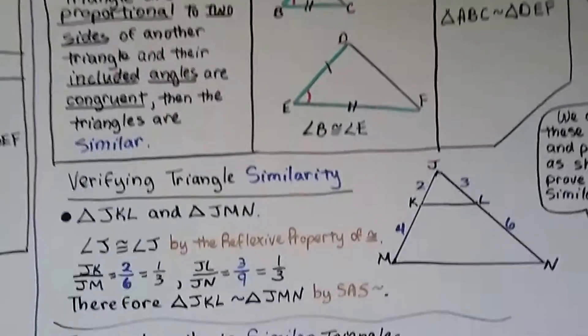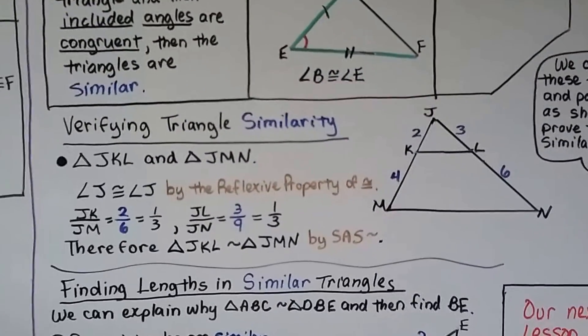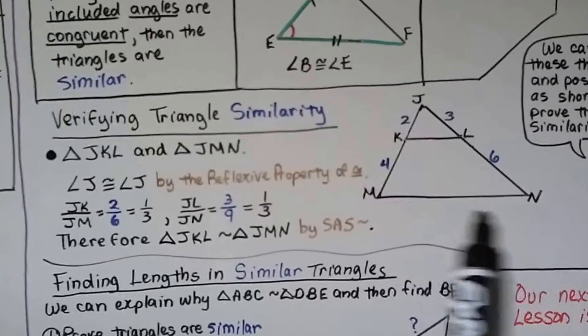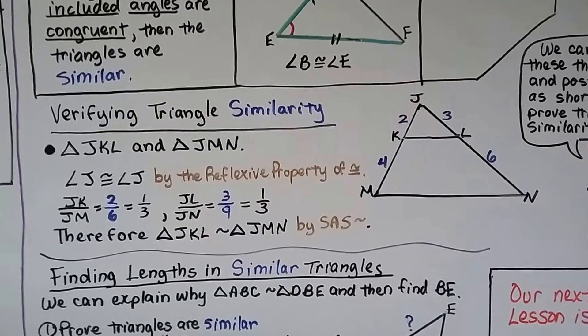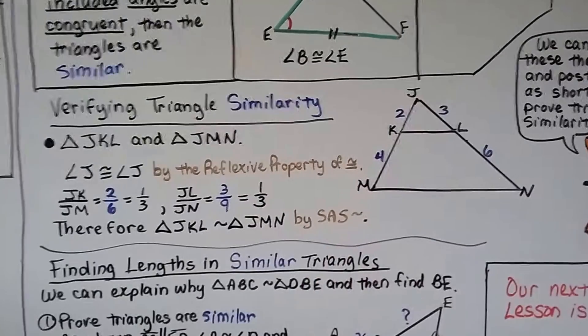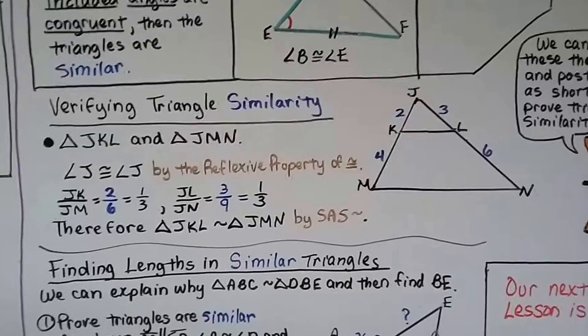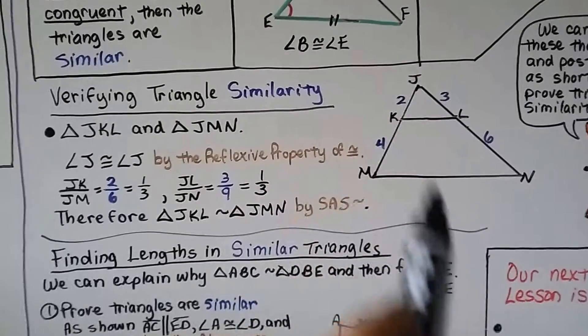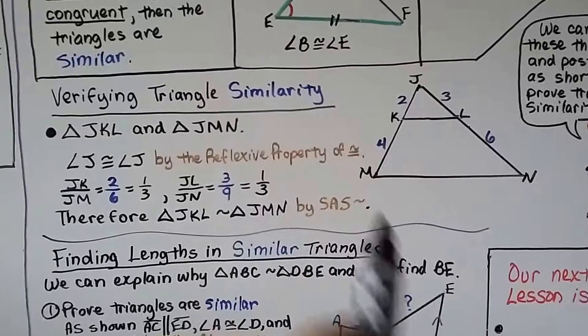Here's verifying triangle similarity again. We've got this triangle JKL, this little one, and then we've got this big one, JMN. Angle J up here is congruent to angle J by the reflexive property of congruence. What it's saying is this little angle J for this little triangle is congruent to the angle J for the bigger triangle.